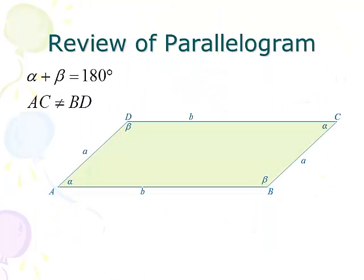Before wrapping up with application problems, let's review parallelograms. Opposite sides are congruent, and opposite angles are congruent. Crucially, consecutive angles — the angles right next to each other — are supplementary, so alpha and beta always add up to 180 degrees. Also, the diagonals of a parallelogram are not congruent; there is a short diagonal and a long diagonal. It's very important to set up the problem properly depending on which one you're looking for.